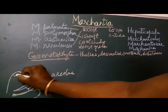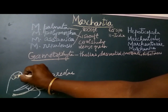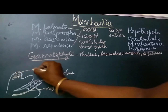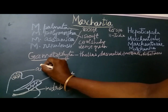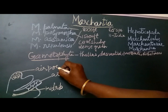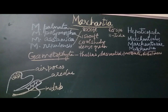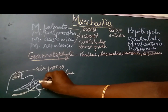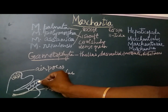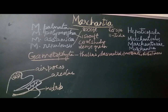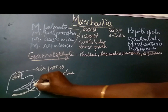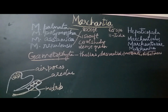These polygonal or rhomboidal areas are called aeroli. In the center of each aeroli, there is an opening seen. These openings are called air pores, which help in the exchange of gases. Each aeroli corresponds to an air chamber beneath the thallus — that is, every rhomboidal area is a marking of the air chamber present beneath it.